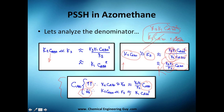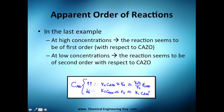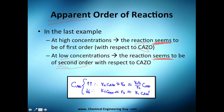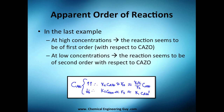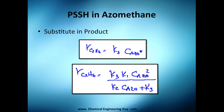This is the concept of apparent order. You cannot say the reaction is strictly first order or second order, but apparently — depending on conditions — it behaves like one or the other. At high concentrations of azomethane, the reaction seems to be first order. At low concentrations, the reaction seems to be second order. That covers everything on the Pseudo Steady-State Hypothesis.